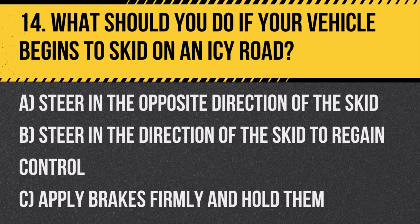Question 14: What should you do if your vehicle begins to skid on an icy road? A. Steer in the opposite direction of the skid. B. Steer in the direction of the skid to regain control. C. Apply brakes firmly and hold them. Answer: B. Steer in the direction of the skid to regain control. This helps to realign the tires with the direction of travel and regain control of the vehicle.